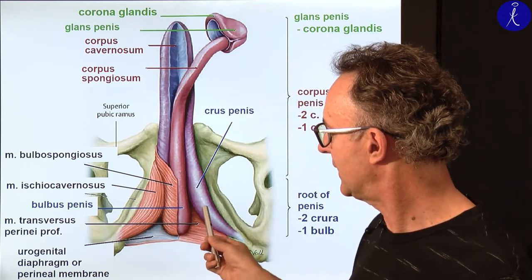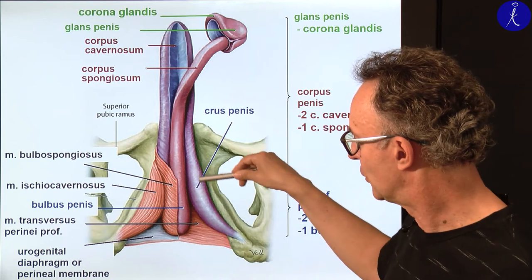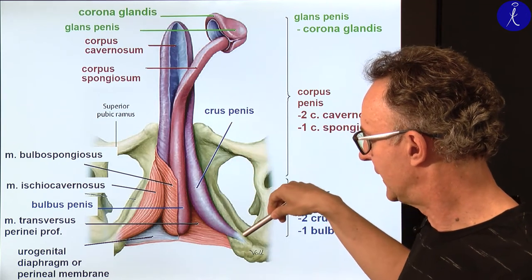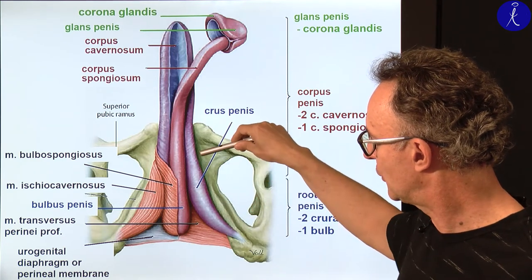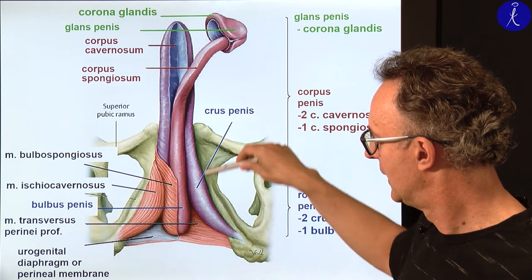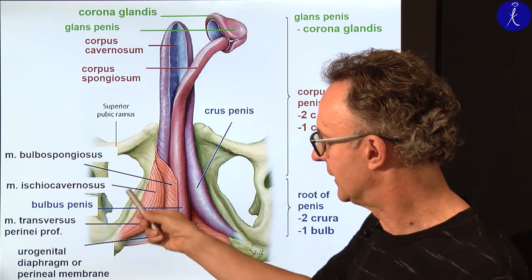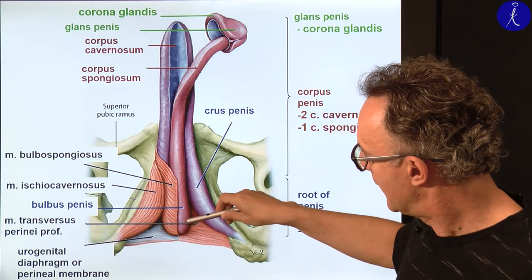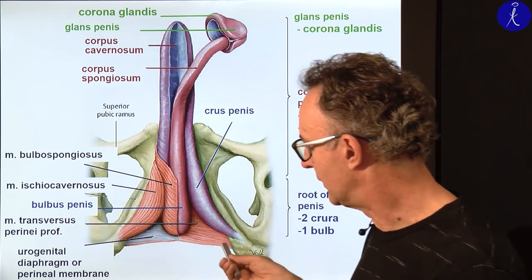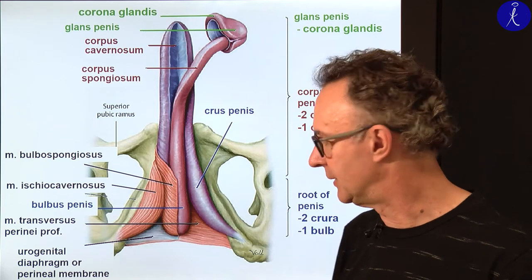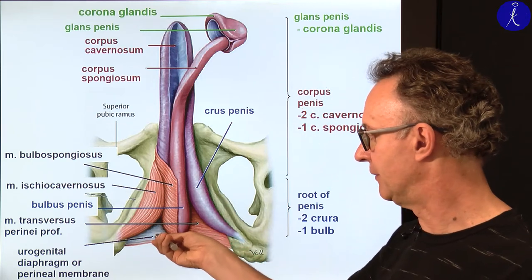The penis has three major parts. The first is quite hidden — this is called the root of the penis, which includes the crura of the penis originating from skeletal elements, partly from the ramus of the ischial bone, then in front from the inferior ramus of the pubic bone. We have two on each side, but we don't see them here because they are covered by a skeletal muscle called ischiocavernosus.